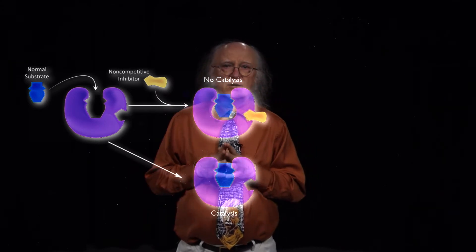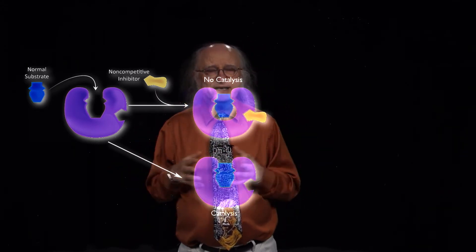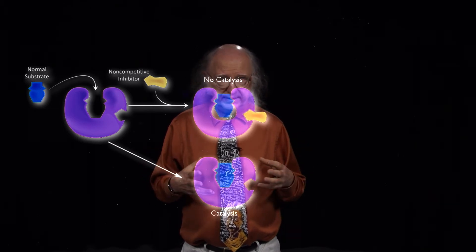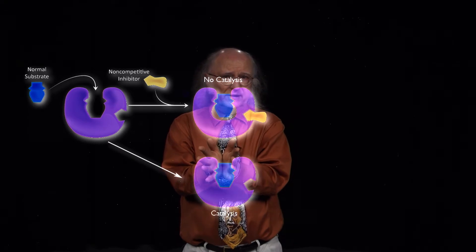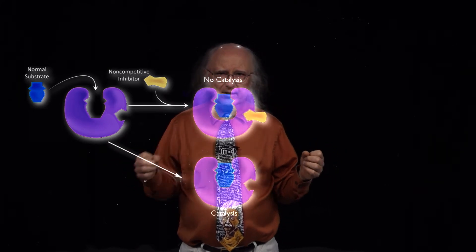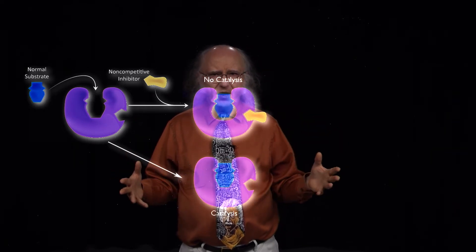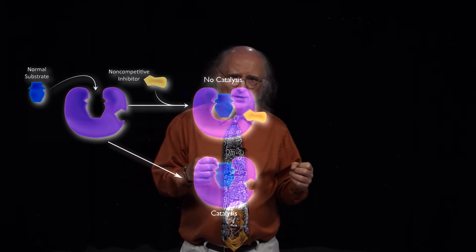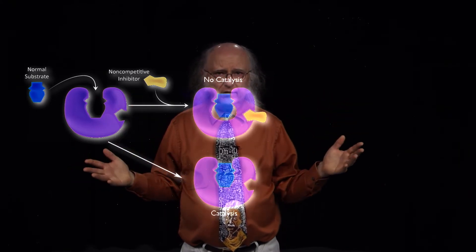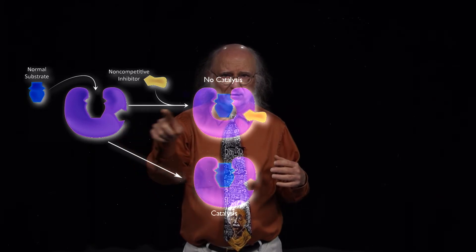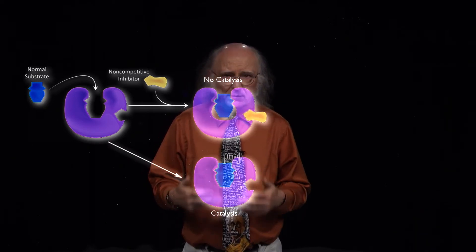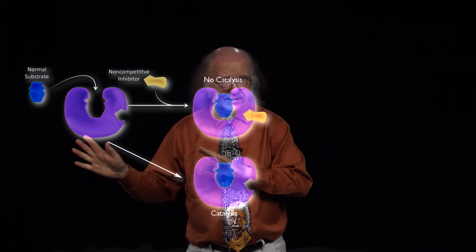Another type of inhibition is non-competitive inhibition, which is fundamentally different from competitive. In competitive inhibition, the inhibitor looked very much like the substrate because they both bind to the same site. In non-competitive inhibition, the inhibitor does not look like the substrate and binds to a different place on the enzyme. Because they're not competing, there's no way for the non-competitive inhibitor to be out-competed by the substrate — a fixed amount of enzyme will always be inhibited, no matter how much substrate is added.